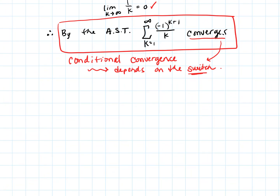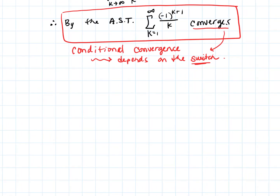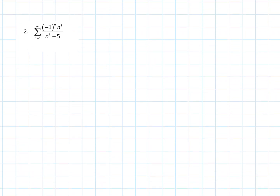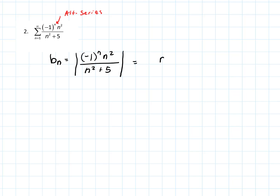Let's look at one more example. This is again very clearly an alternating series. Let's see if it satisfies the alternating series test. Taking the absolute value to find b sub n — removing the switch — we get n squared over n squared plus five. Now we have to look at two pieces to apply the test.